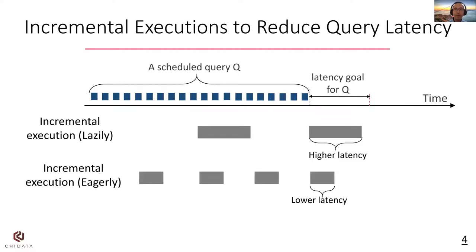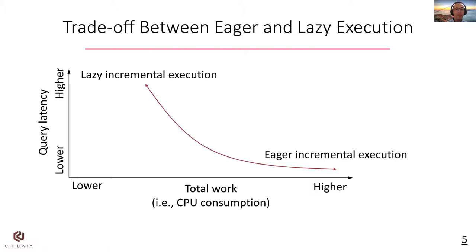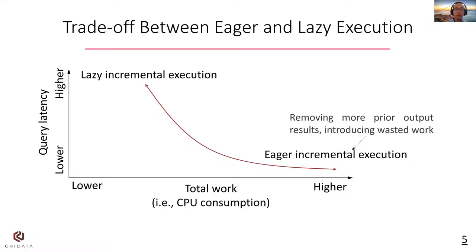One way to reduce query latency and meet the latency goal is to use incremental execution, where we can start the query early and incrementally incorporate new data into prior results. We can execute the query more eagerly to further reduce the query latency, which means we start every execution for a smaller amount of data. However, eager incremental execution can increase the total work or CPU consumption, although it decreases the query latency at the same time.